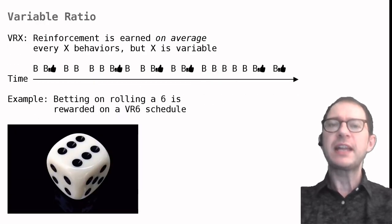VR schedules are like FR schedules in that they count how many times you do a behavior, but the number needed to get a reward changes unpredictably. Gambling is a classic example of VR schedule. You know that there is a probability of winning every time, but you never know exactly how many times you have to play to win. Our timeline indicates this by having a variable number of Bs in between reinforcers.